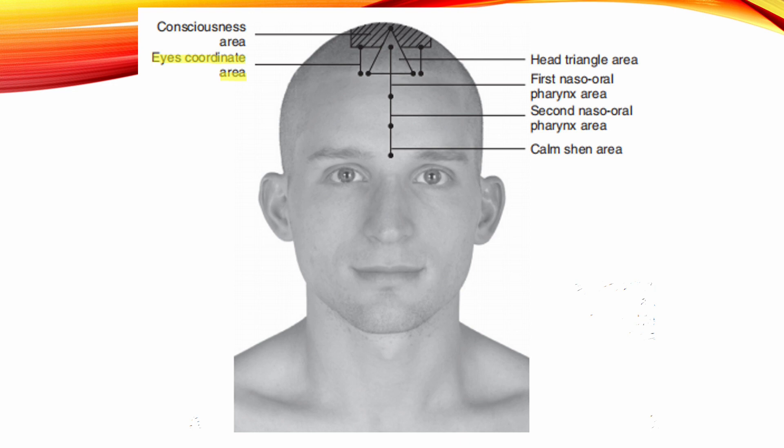Eye Coordination Area. Location: 2 cm lateral from the anterior-posterior midline, starting at the anterior hairline and 2 cm upward. Indication: Ophthalmologic paralysis.